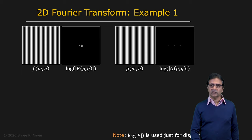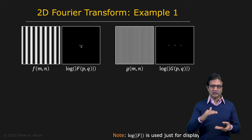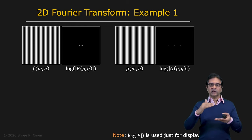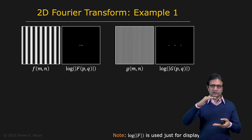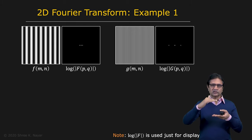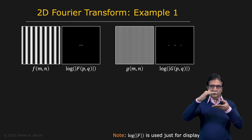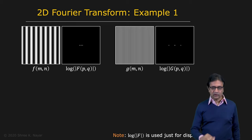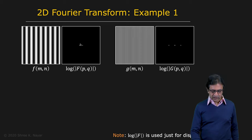But you also have a dot in the center, at zero frequency. That's because this cosine function has a mean value of, say, 128 — if the image is zero to 256. Images cannot be negative, so we bump it up to 128. Therefore, there's a DC component, a constant value on top of which the cosine sits. That's why you end up getting these three dots.